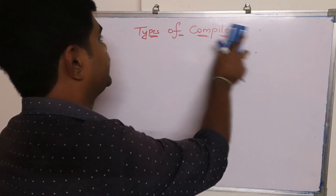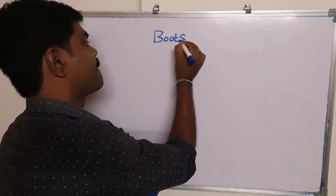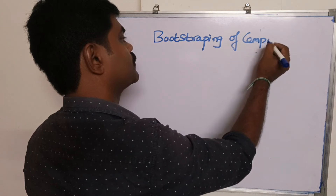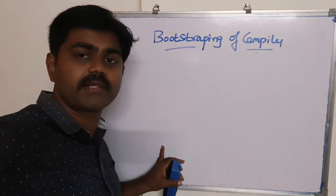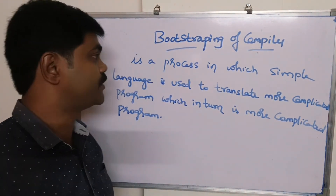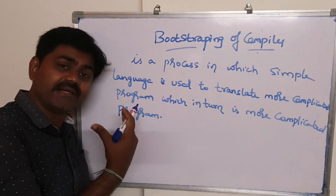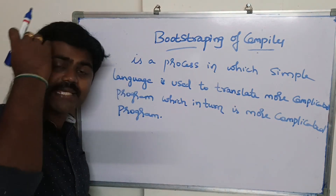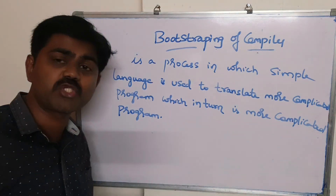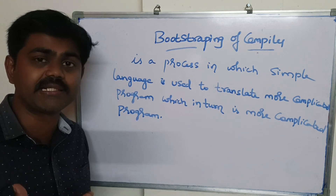Now we will see bootstrapping of a compiler. Bootstrapping is a process in which a simple language is used to translate a more complicated program, which in turn gets an even more complicated program. As we already explained about cross compiler — when we have two compilers and combine them, we get a resultant cross compiler. Bootstrapping is applied to cross compilers.